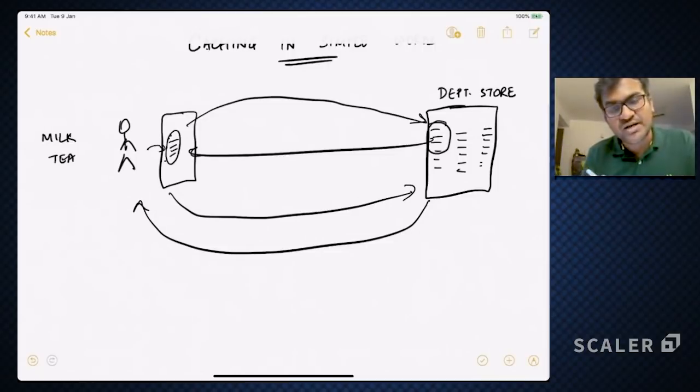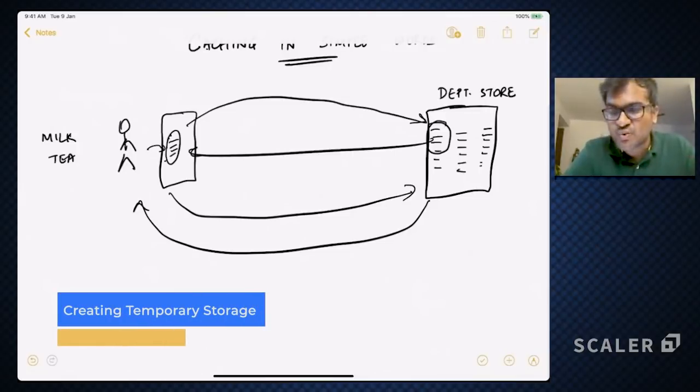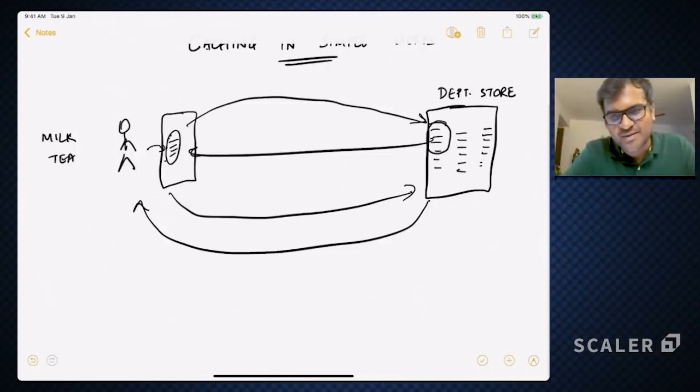So what have I done in the process? I could still have gotten milk from the department store. It's the same milk. However, I created this temporary storage which is close to me, which is much faster for me to be able to store that milk so that I can make my milk tea faster. Plus then I have more motivation to make milk tea because I have it in my fridge.